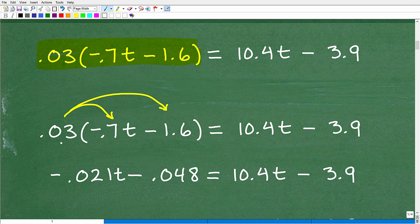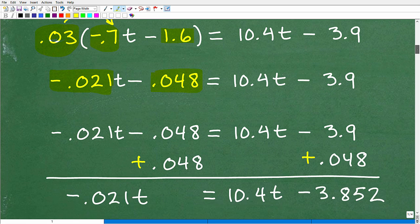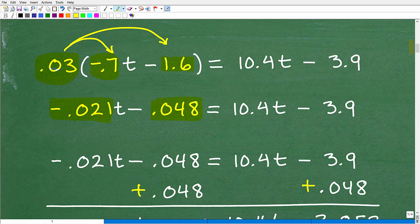So I'm going to have this negative 0.03 times negative 0.7t minus 1.6. So we're going to take this decimal in our calculator, multiply by that decimal, and we get negative 0.021t, 0.03 times this 1.6. That's going to give us this negative 0.048. And that's all we want to do in our first step. We don't want to take too many steps at once. A lot of students mess up.